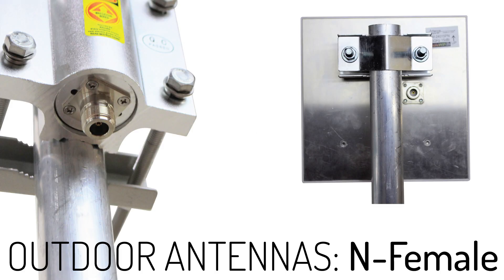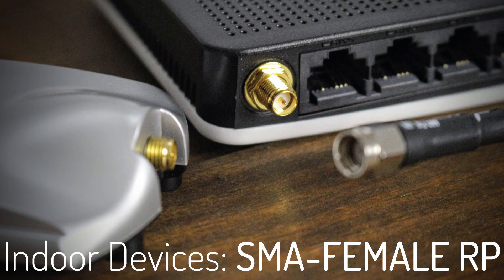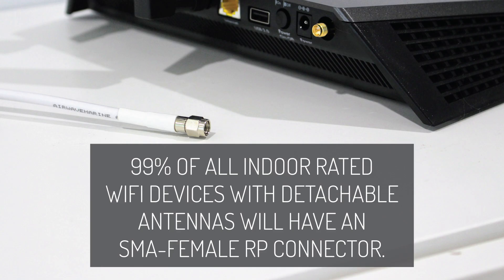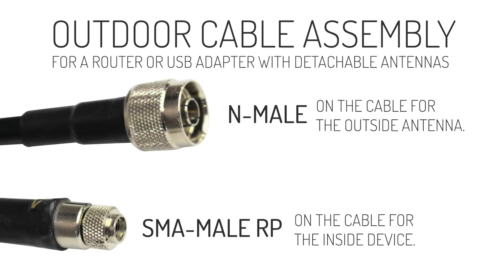Moving on to typical Wi-Fi cable configurations: for an outdoor Wi-Fi setup, the outdoor antenna will almost always have an N-female connector built onto it — threads exposed. Inside, your USB adapter or router will have an SMA female RP, assuming the antennas are detachable. So your cable assembly will be N-male on one end and SMA male RP on the other, connecting the outdoor antenna to your indoor Wi-Fi device.